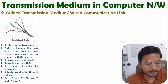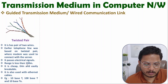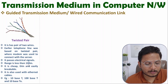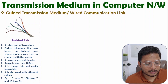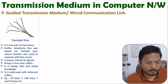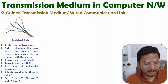With twisted pair, we are passing electrical signals and it has a very limited range — only up to 100 meters. It is cheap because it is thin in terms of material and easily breakable. This twisted pair is also found inside ethernet cables.